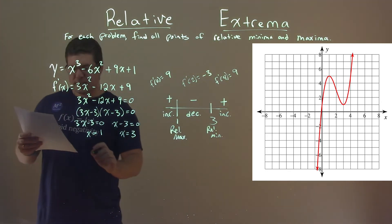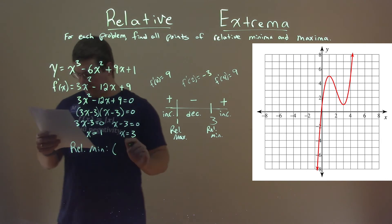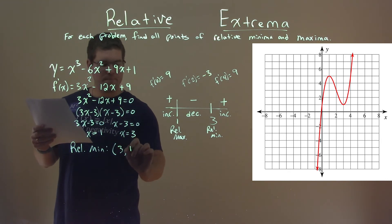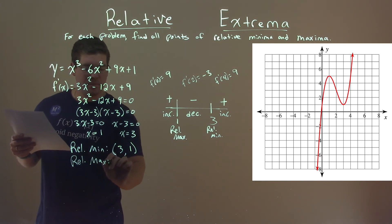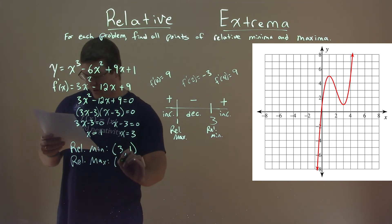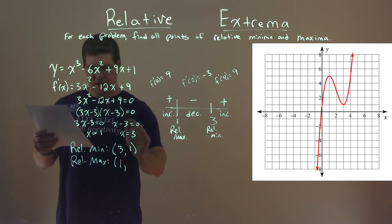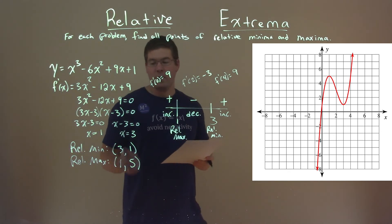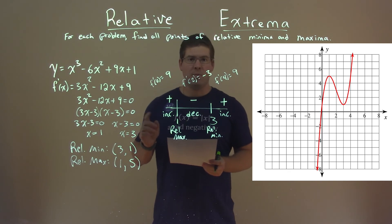So we can say we have a relative minimum at the x value of 3, and I plug that into my original function and get the y value of 1. And we have a relative maximum. x value of 1 goes in, I plug that into my original function to get the y value, and I got 5. And so my final answer here is we have a relative minimum at 3, 1, and a relative maximum at 1, 5.